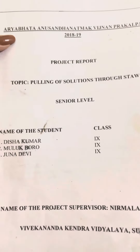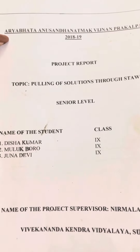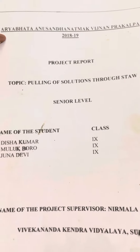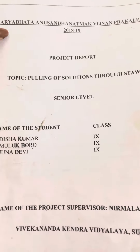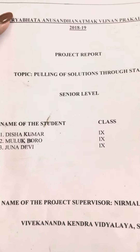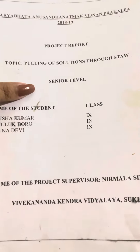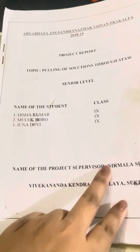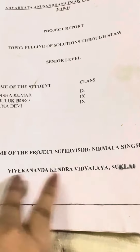The first page will be the name of the competition or the type of project report you have to make. First you have to name it, then the project report topic, senior or junior level, name of the students, class name, the project supervisor — that is the guide teacher name — and the school name.